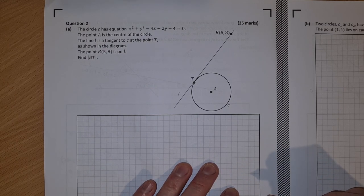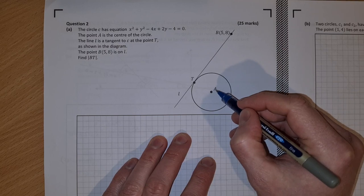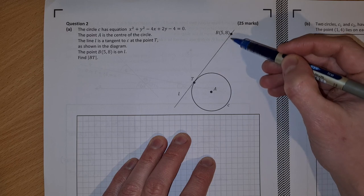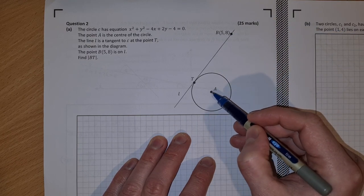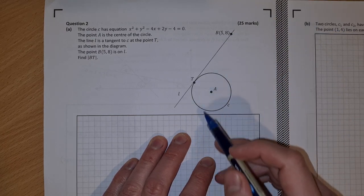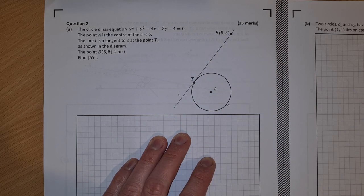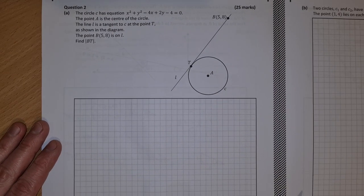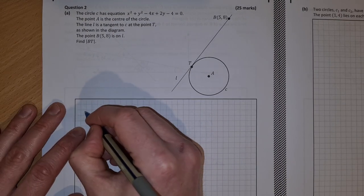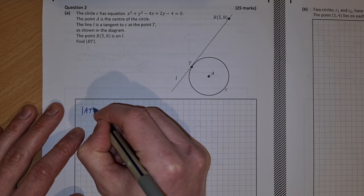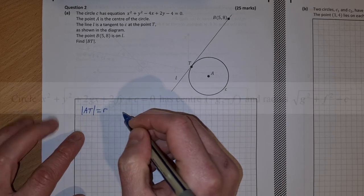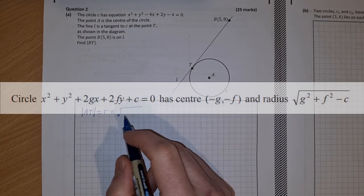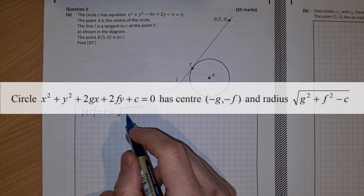To find the length from B to T, we can first find the center A, then find the distance from A to B, then find the distance from A to T which is the radius, and then use Pythagoras to find BT. I'll start by finding the radius. The length AT equals the radius, and the radius of a circle is the square root of g² + f² - c.